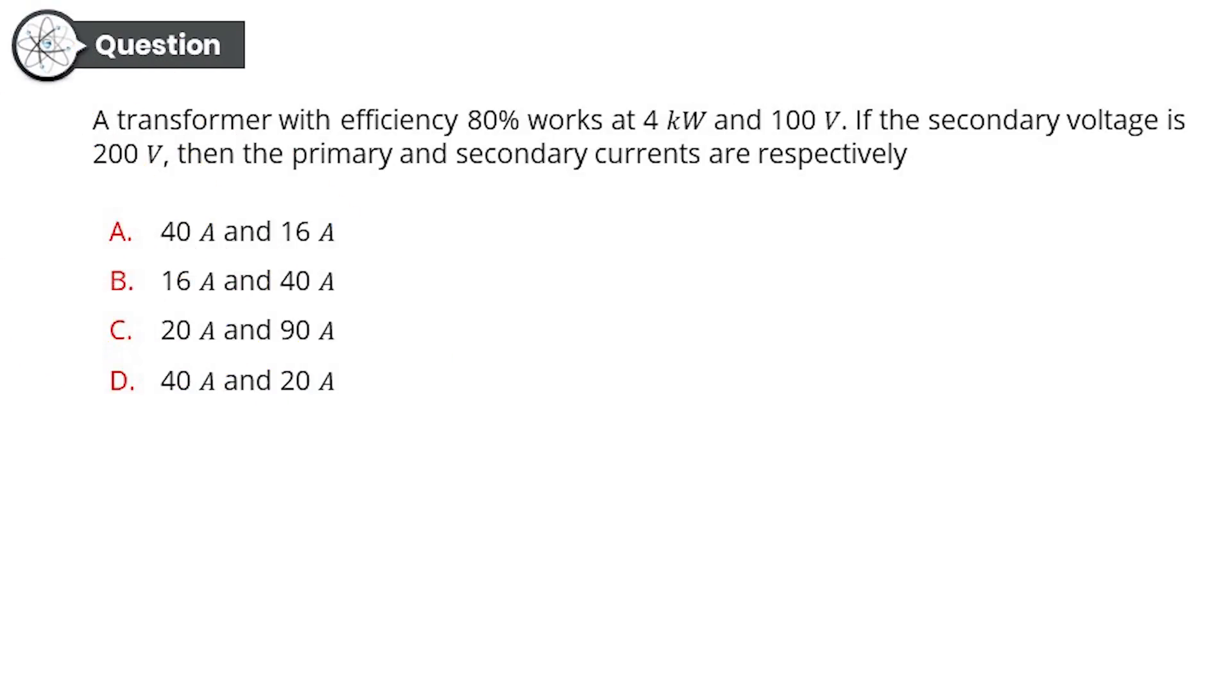Good job till now guys, you are doing amazingly well. Let's move on to question number five. A transformer with efficiency 80% works at 4 kilowatts and 100 volts. If the secondary voltage is 200 volts, then the primary and secondary currents are respectively how much? Well, it's all about the current now. Option A: 40 amperes and 16 amperes. Option B: 16 amperes and 40 amperes. Option C: 20 amperes and 90 amperes. Option D: 40 amperes and 20 amperes. What do you think? Did you get it right?